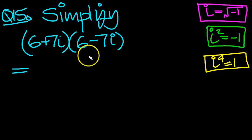Simplify 6 plus 7i times 6 minus 7i. Notice that these are conjugates, so the middle term should disappear.